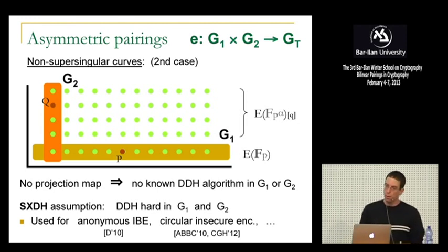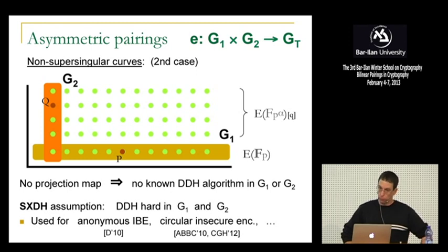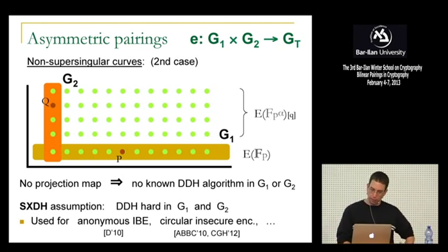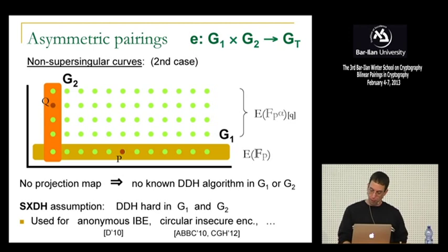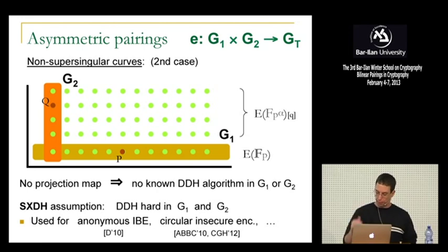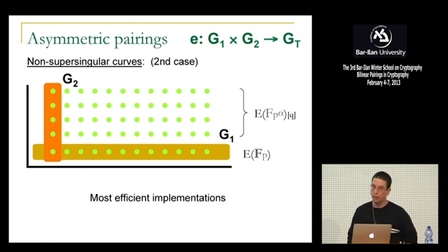There's also the symmetric SXDH variant where DDH is hard in both groups, and SXDH where it's hard in only one — the latter has come up in proxy encryption schemes. There are lots of opportunities here, lots of structure for constructing systems with various hardness assumptions. Using this specific eigenspace group also gives very efficient implementations, and Florian will talk about taking advantage of groups G1 and G2 specifically.